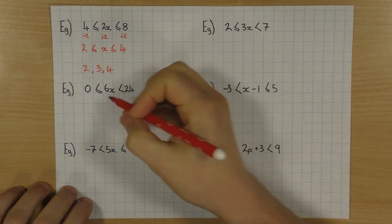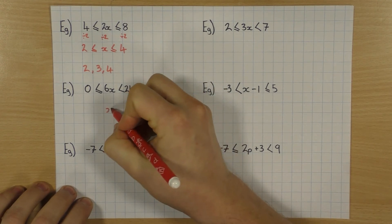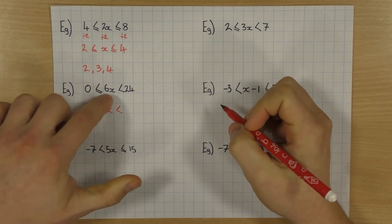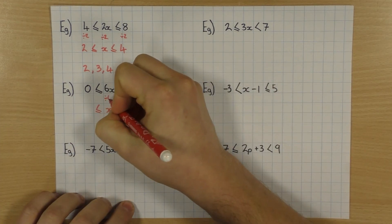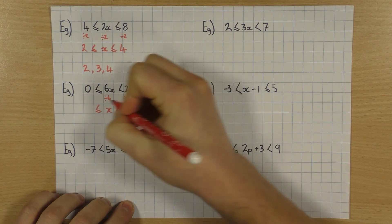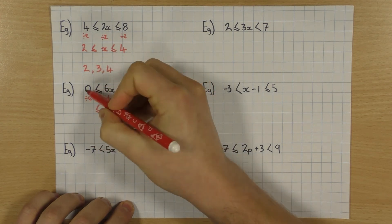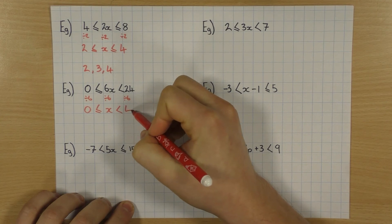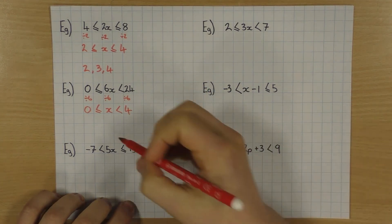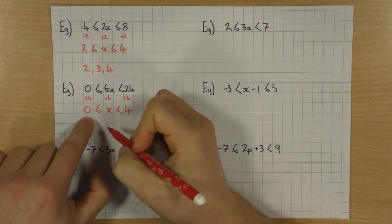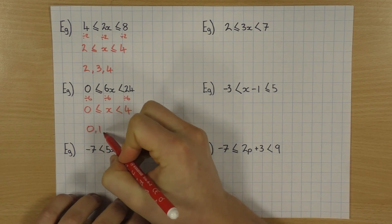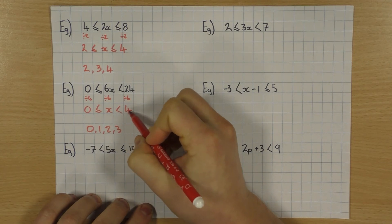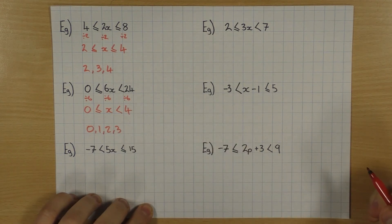Same thing for this one — I don't want 6x, I want it to be x. Inequality signs stay the same. To go from 6x to x, I divide by 6. Don't forget to do it to everything. 0 divided by 6 is 0, and 24 divided by 6 is 4. So what solutions could I have for x? Well, it's equal to 0, so I could have 0. Then it's bigger than 0, so 1, 2, 3. But it's less than 4 and not equal to 4, so I cannot include the 4.